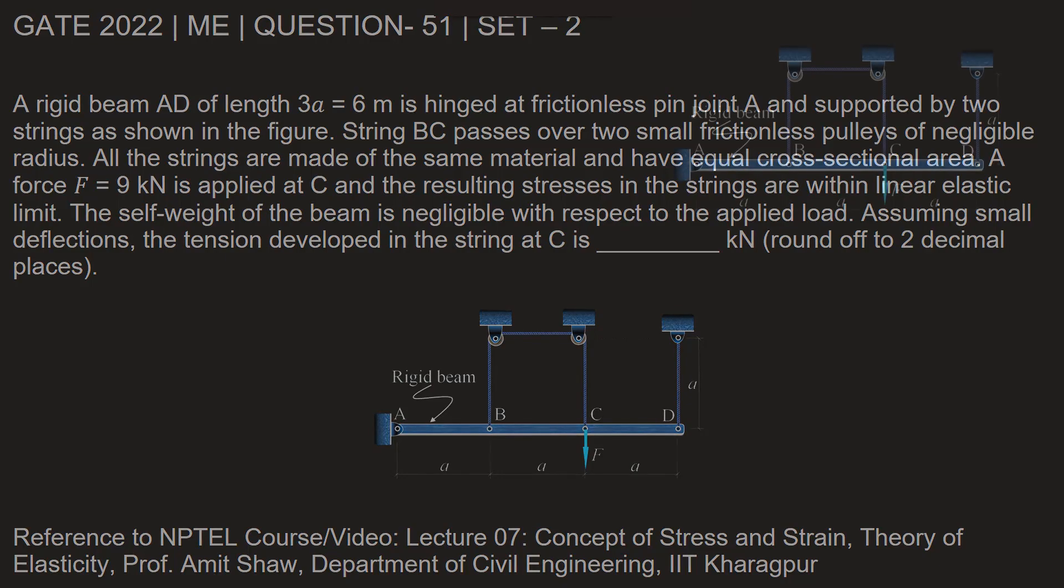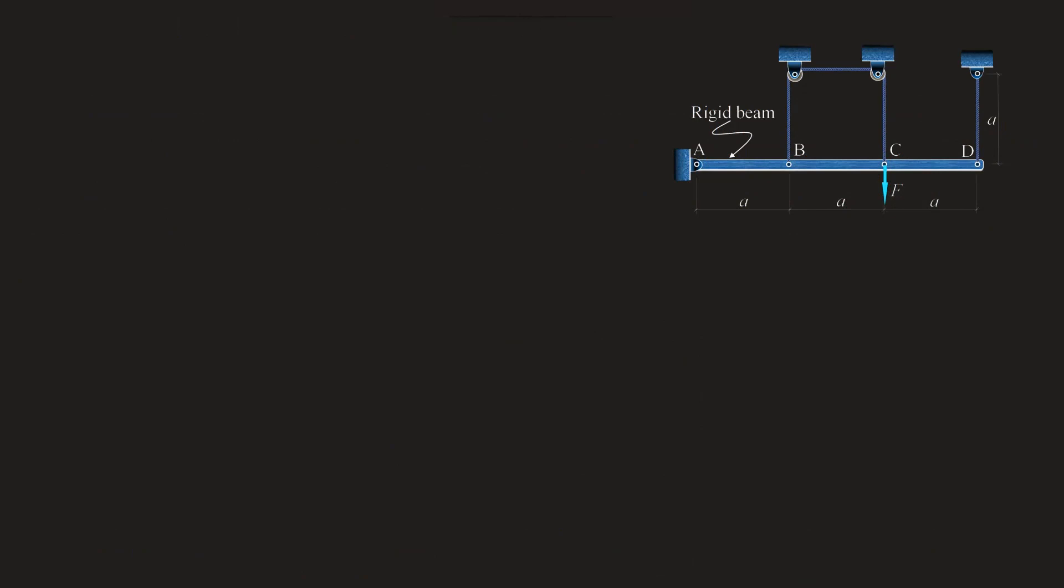Let's find out. Now if we try to draw the deflected curve of this structure due to this force F, we'll get it as this. So we can take the deflection at point B as delta B, deflection at C as delta C, and deflection at D as delta D.